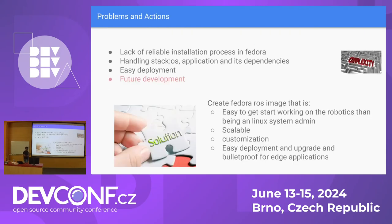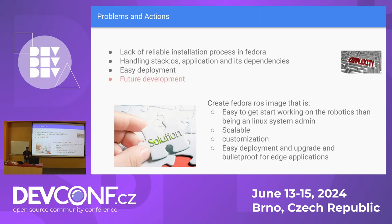Coming to why we need ROS on Fedora: first of all, it is fun to have ROS. But talking about the problem statement — there is a lack of proper installation processes in Fedora. If you try to install ROS on Fedora it is pretty painful. There are some RPMs but you have to install the dependencies and all — it is pretty painful. Handling the OS stack on edge, the application and its dependencies, has been cumbersome.